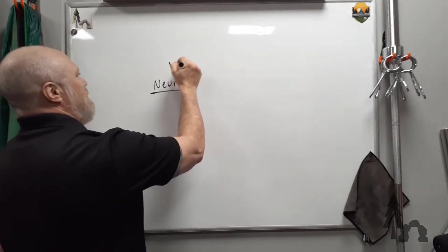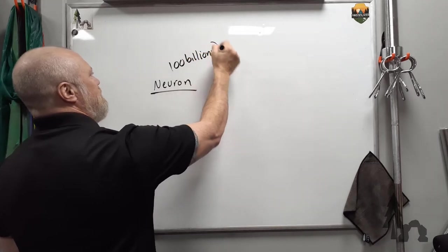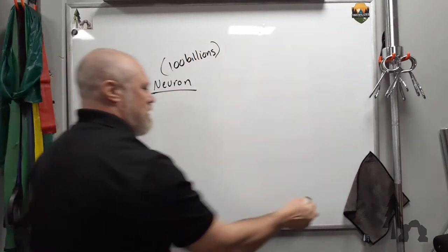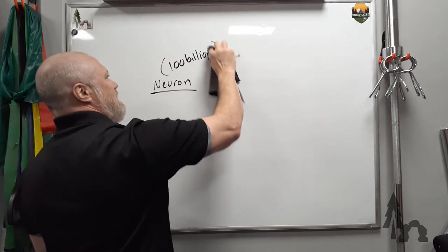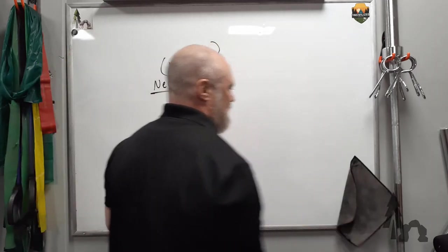So neurons, there are about 100 billion neurons, all right? 100 billion neurons, and that's just kind of a rough number. I wouldn't get stuck on that.